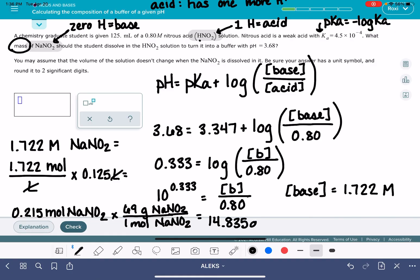14.835 grams. Alex wants this to two significant figures. So that's going to be 14 with a decimal point at the end. And it also wants you to include a unit symbol.